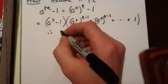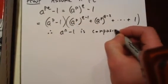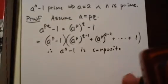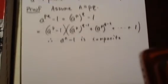So therefore, a to the n minus 1 is composite. So by the contrapositive, we have shown that if n is a composite, a to the n minus 1 is composite.